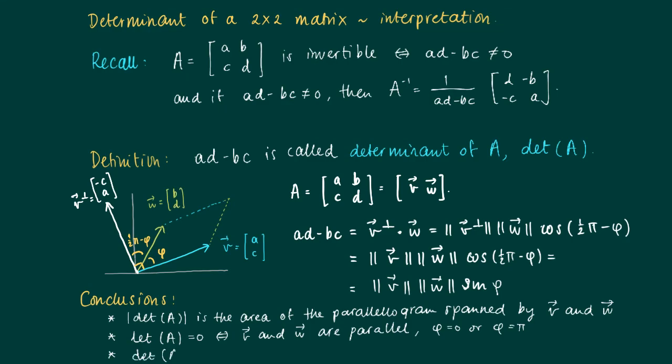Now you can imagine that the area of the parallelogram is zero, so either w is in the direction of v or the other way around. Also, if the determinant is larger than zero, then sin(φ) is larger than zero, which means that φ is between zero and π.